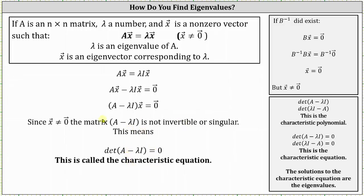Let's go back up to this line here just for a moment and justify why the matrix that is the difference of matrix A and lambda times the identity matrix is singular or not invertible. If it was invertible or non-singular, the equation above would be in the form of some matrix B times vector x equals a zero vector.